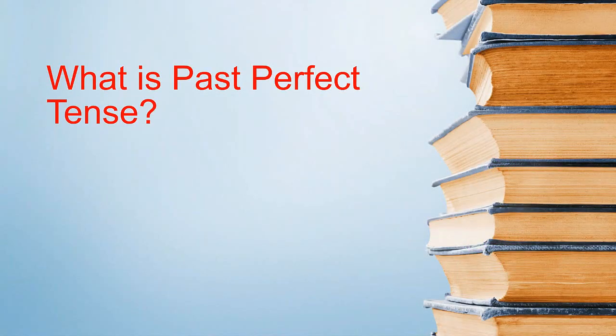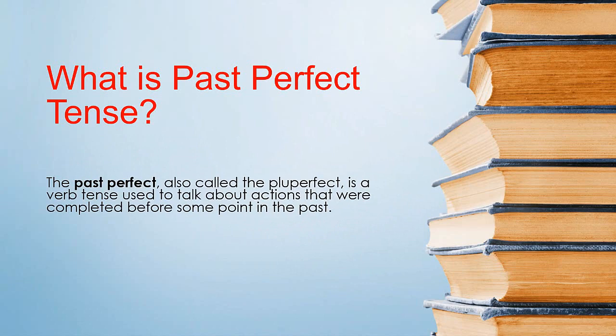Past perfect tense - what is it? The past perfect, also called the pluperfect, is a verb tense used to talk about actions that were completed before some time in the past.